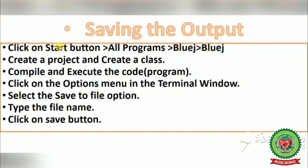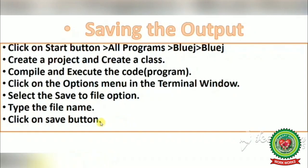The first objective is saving the output. The steps to save output are: click on Start button, All Programs, BlueJ, BlueJ. Create a project and create a class, then compile and execute the code as discussed earlier. Click on the Options menu in the terminal window — the terminal window is the output screen. Select the Save to File option, type the file name, and click the Save button. This way you can save your output for future use.